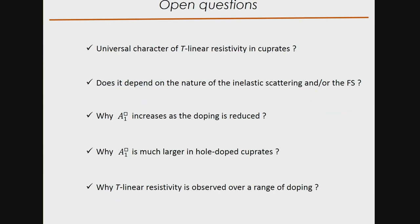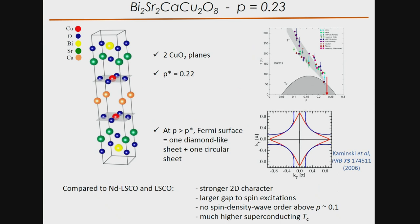Let me now ask some questions and try to answer them. First: is there any universal character of T-linear resistivity in cuprates? Does it depend on the nature of inelastic scattering or details of the Fermi surface? Why does the linear resistivity coefficient A₁² increase as doping is reduced — both for electron- and hole-doped? Why is this coefficient much larger — by a factor of four to five — in hole-doped cuprates compared to electron-doped? And how can we explain that T-linear resistivity is observed over a broad range of doping?